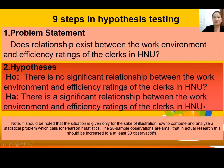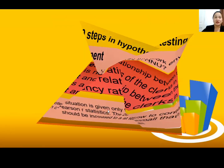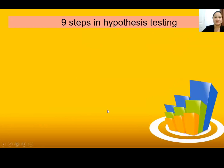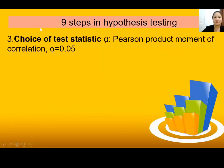Note that the 20 sample observations are small; in actual research it should be at least 30 observations. Step 4 — Choice of Test Statistic: We are using the Pearson product-moment correlation r. The standard level of significance we are using is alpha = 0.05.